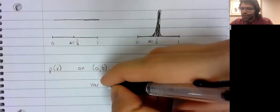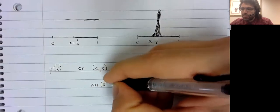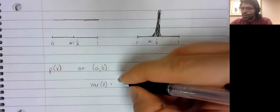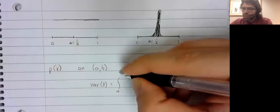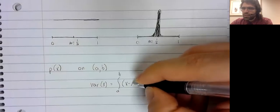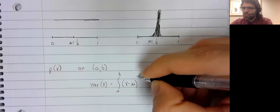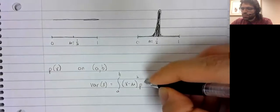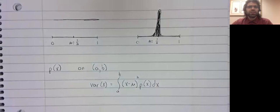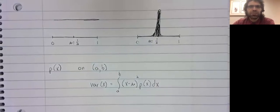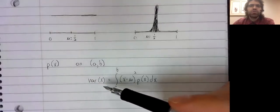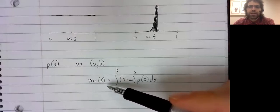And we define the variance of the probability distribution to be the integral from a to b of x minus the mean squared times p of x dx. And the bigger the variance, the more spread out your data is.